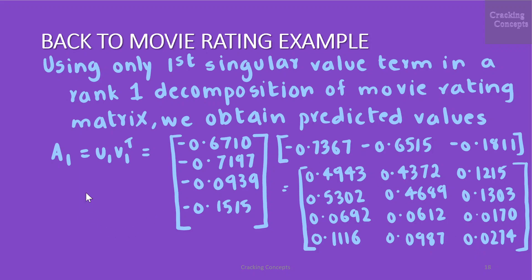That is A_1 is given by u_1 v_1^T. This is u_1 and we have the first singular value multiplied to it. We get this resultant matrix and this first rank 1 approximation A_1 is insightful because it tells us that Ali and Beatrix likes science fiction movies such as Star Wars and Blade Runner because their values are greater than 4.